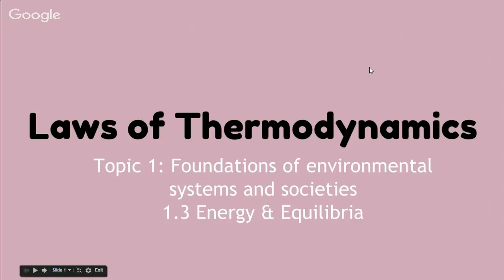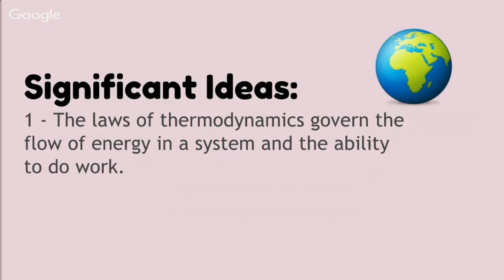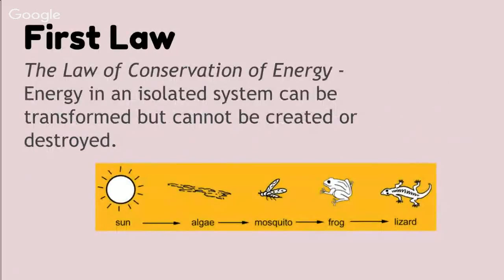So let's talk about laws of thermodynamics in ecosystems. We want to talk about how the laws of thermodynamics govern the flow of energy in a system and the ability to do work. We can think about our sun and how it feeds the earth with all of its radiant energy, but most of this energy or sunlight is not going to be taken up by plants — it's going to be unused by organisms and lost as heat and heat of evaporation.